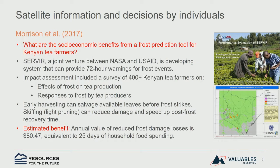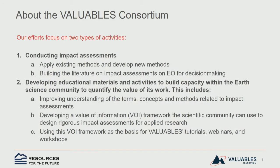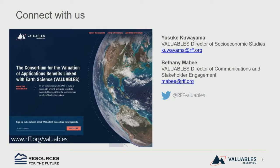Finally, a study by Isaac Morrison at MSI International estimates the socioeconomic benefits of a frost prediction tool for Kenyan tea farmers. The specific decisions enabled by a frost forecast are to pick tea leaves early or treat crops to make them more resilient to frost. The annual value of this frost prediction tool is about $80 per household, which is substantial in this context. Please let me know if you want to know more about the Valuables Consortium.